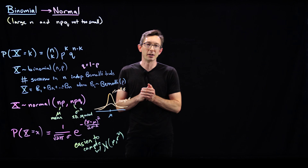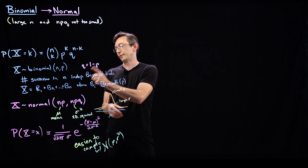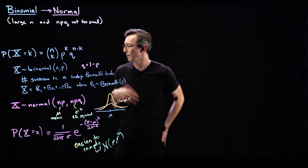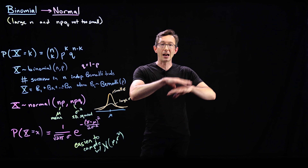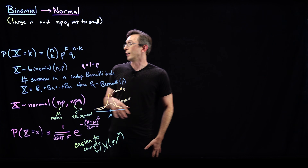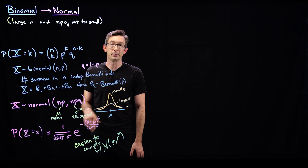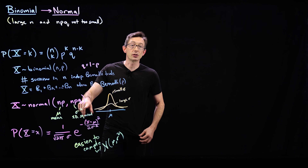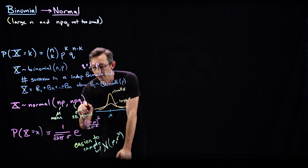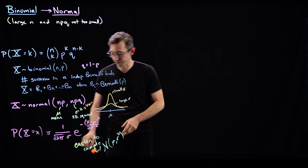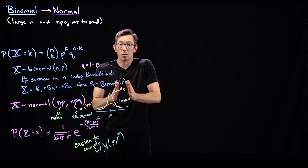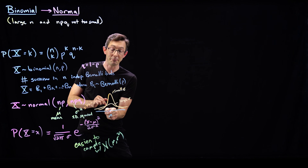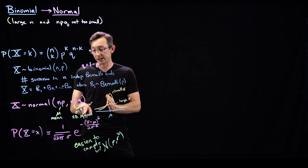A good example of a normal distribution would be something like the height of Americans, or the number of heads given 100 coin flips. You can have a large variance or a small variance. The standard deviation squared, sigma squared, is often called the variance, or Var(X). Big variance means a lot of spread. Small standard deviation means you have a very narrow, peaked distribution, so you're very likely to be close to the mean.